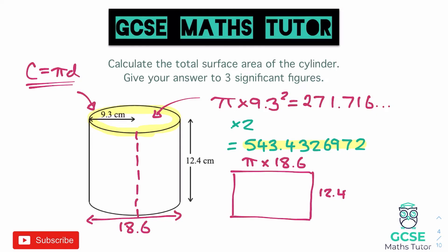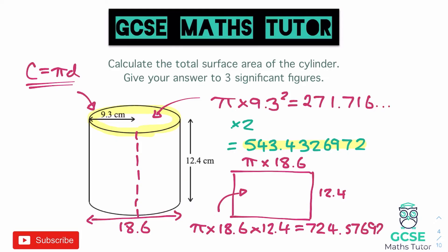So to work out the length along the top of the rectangle we do pi times 18.6. To get the area of the rectangle — length times width — if the length is pi times 18.6 and the width is 12.4, multiplying those together: pi times 18.6 times 12.4 gives us a final answer of 724.5769296. That is the curved surface area around the outside of the cylinder.